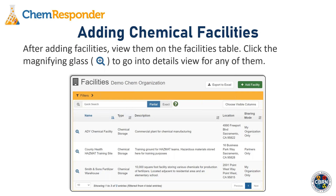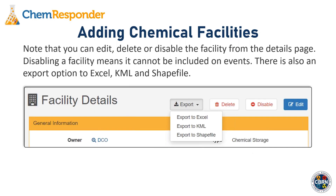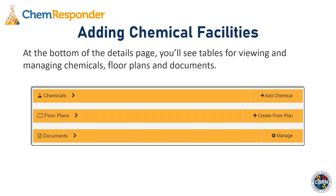After adding facilities to your organization's space, you can view them on the facilities table. Click the magnifying glass next to any facility to go into the details view for that site. You can edit the facility to modify contacts or update the chemical inventory retroactively. You can also delete or disable the facility from the details page — disabling means it cannot be included on events. There is also an export option to export facility information to Excel, KML, or a shapefile. At the bottom of the details page, you'll see additional tables to view and manage chemicals, floor plans, and documents.